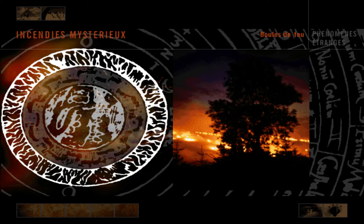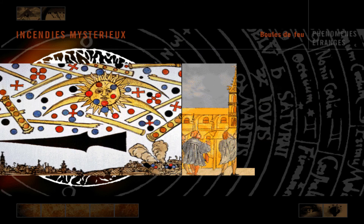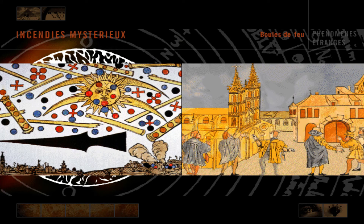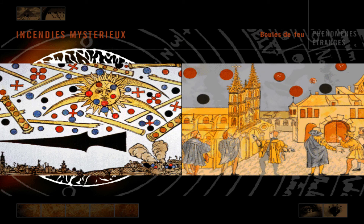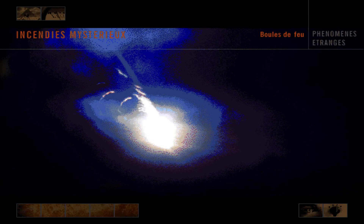Ce mythe était toujours vivace au XVIe siècle, lorsque deux des plus célèbres feux célestes furent rapportés — à Nuremberg, en Allemagne, et à Bâle, en Suisse. Personne ne fut blessé, mais les boules de feu peuvent être mortelles, et on en signale encore, malgré l'opinion des scientifiques pour lesquelles elles n'existent pas.